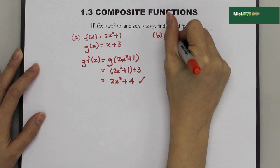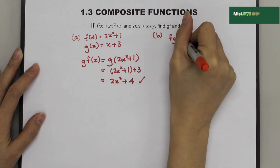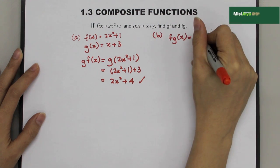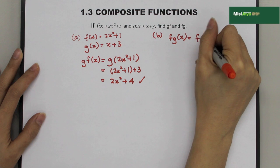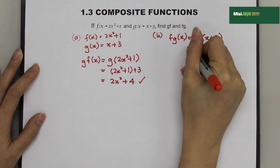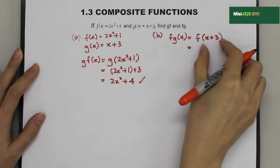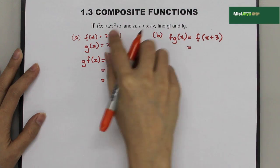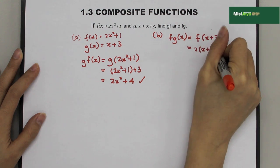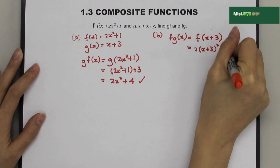So, fg equals... So, g(x) is x + 3. So, it'll be f(x + 3). Then, equals... So, this x + 3, I'm going to substitute in the function f. So, it'll be 2(x + 3)² + 1.